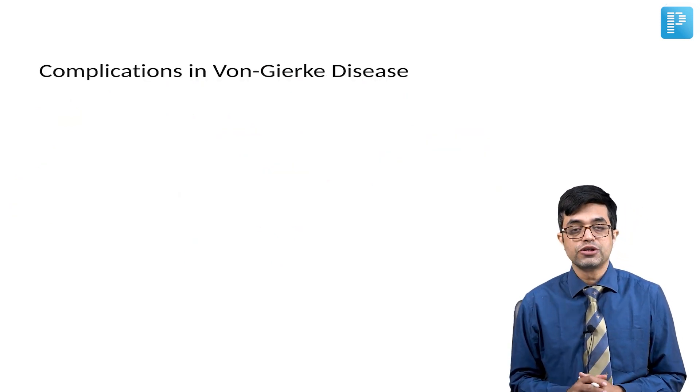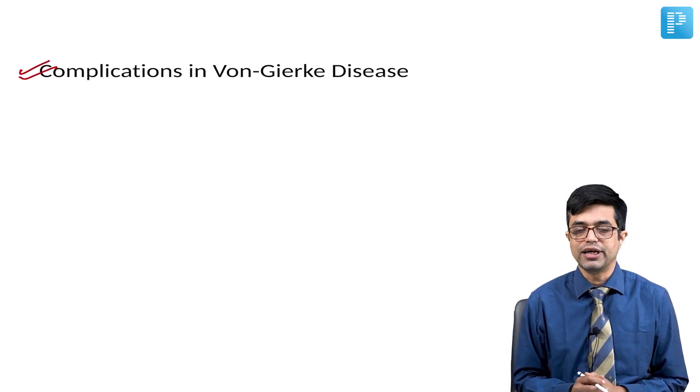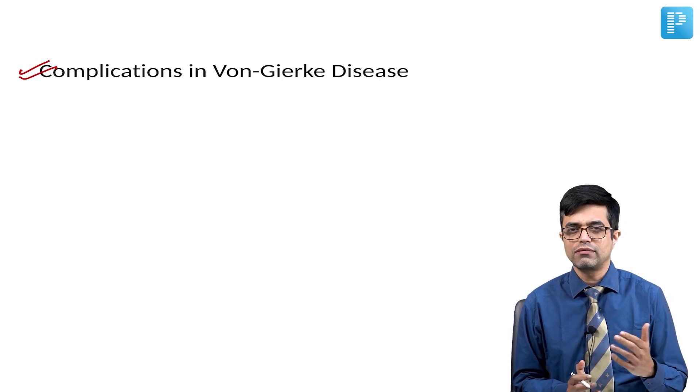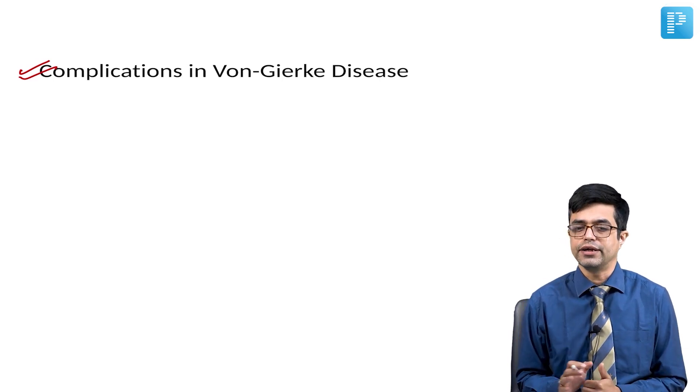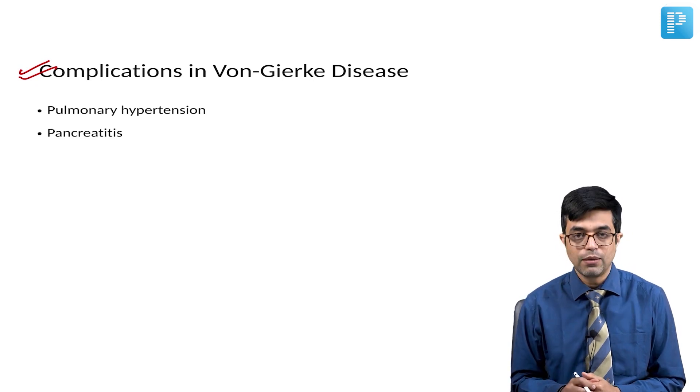What are the complications which are common in Von-Gierke disease? Complication is something which is important for NEET superspeciality, and complications are not prominently mentioned in other Indian textbooks. The complications include pulmonary hypertension, pancreatitis, and renal failure.